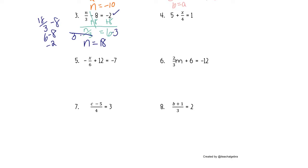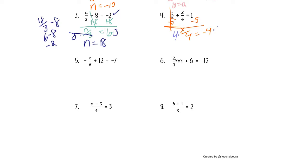We've got x over 4 plus 5 on the left and a 1 on the right. To get to the x term, we need to get rid of this 5. So the opposite of positive 5 is negative 5. 5 minus 5 cancels, and I'm left with x over 4 equals negative 4. Now we want to get x alone, so the opposite of dividing by 4 is multiplying by 4. 4 divided by 4 cancels out, I'm left with x, and negative 4 times 4 is negative 16. Let's plug this back in and check our work: 5 plus negative 16 over 4 is 1. Negative 16 divided by 4 is negative 4, and 5 minus 4 is 1. That is the truth.